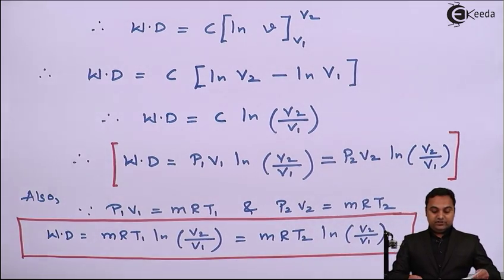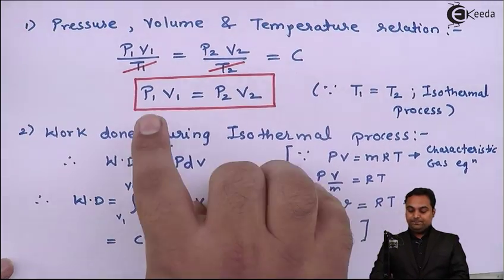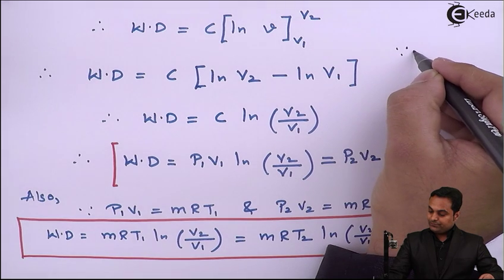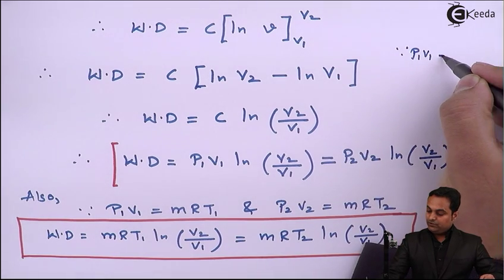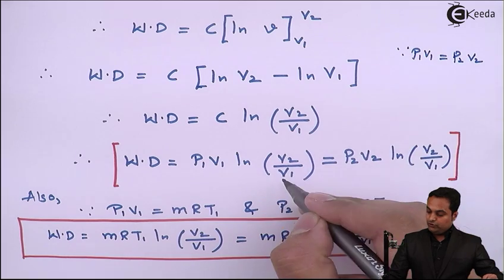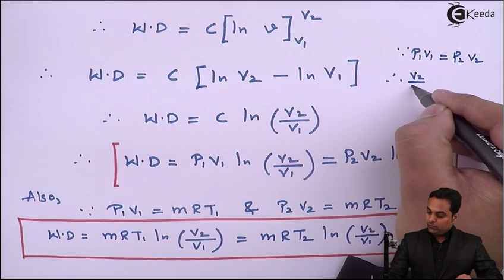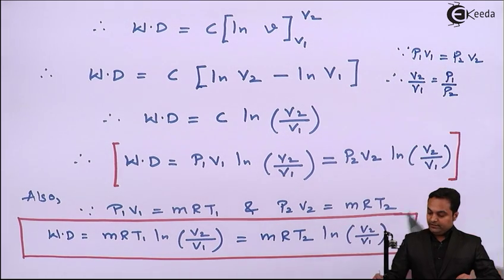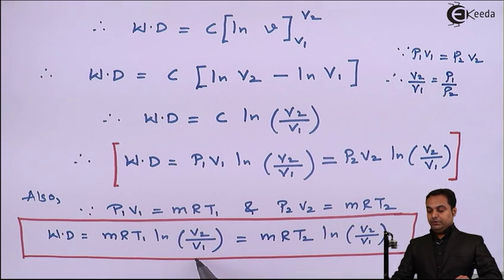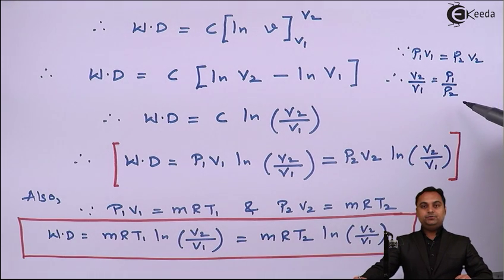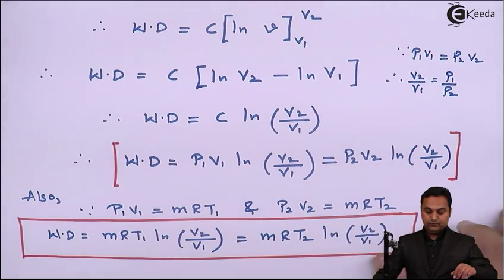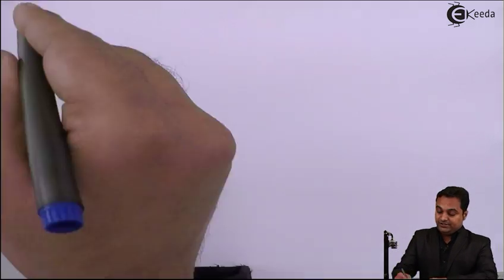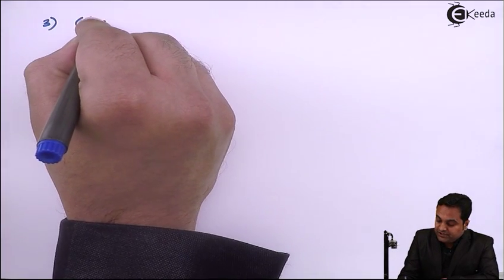Since we established P1V1 = P2V2, we can write V2/V1 = P1/P2. This means in the work done formula, V2/V1 can be replaced with P1/P2. So the work done for the isothermal process can also be expressed in terms of the pressure ratio P1/P2.